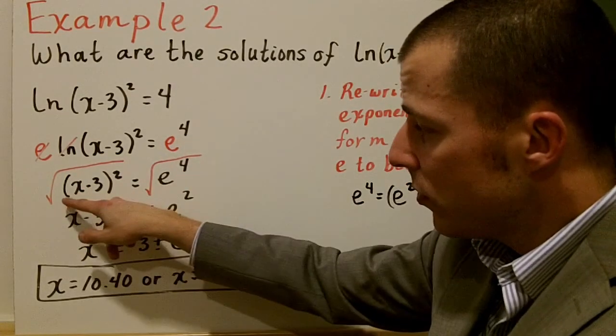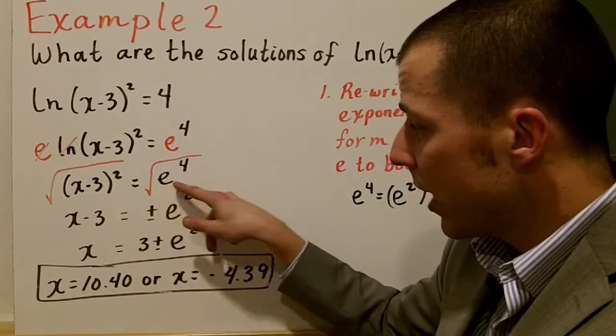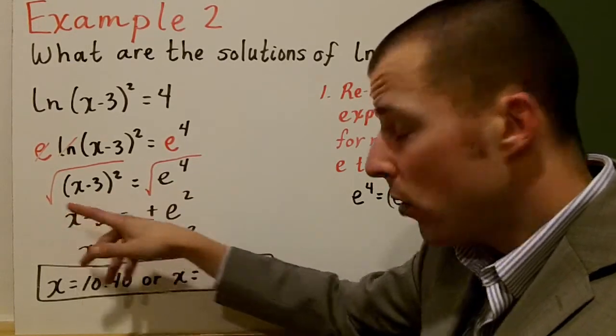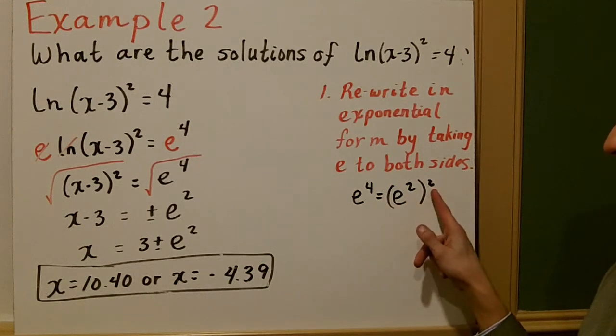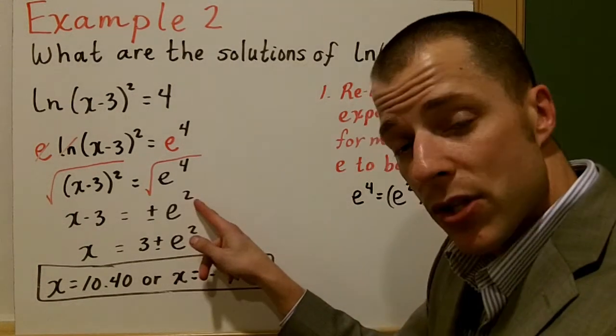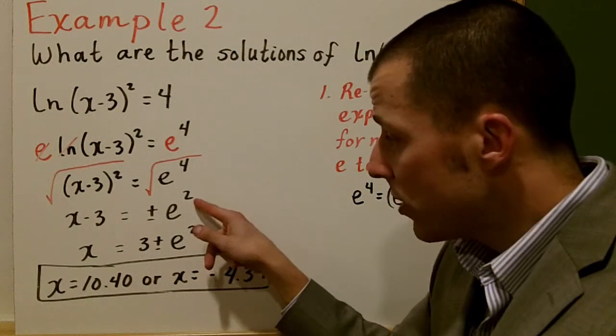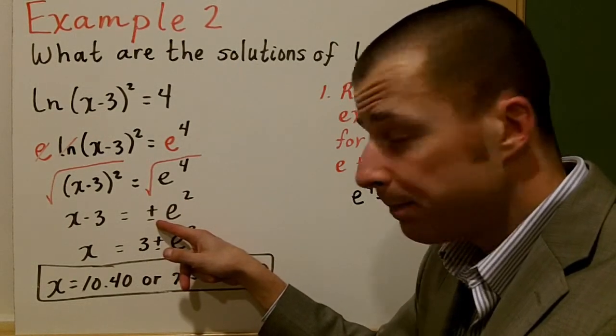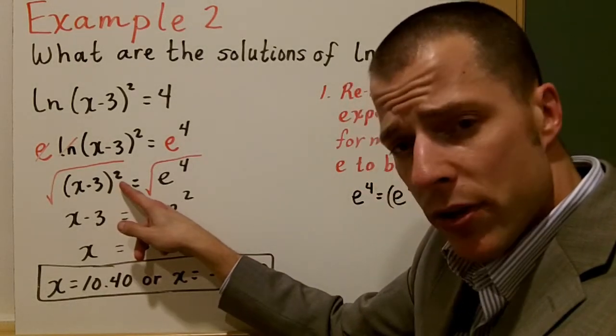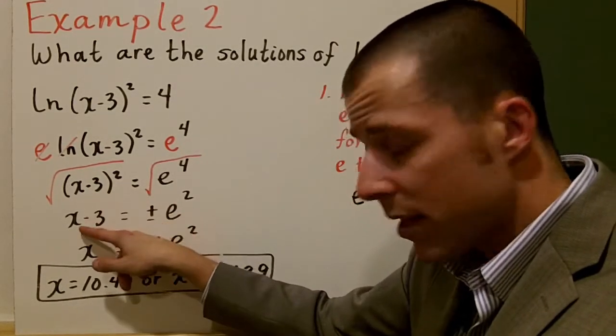Now, to undo that square, we're going to square root both sides. When you do that, you have to remember that e to the 4th is equal to e squared squared. That's why we have e squared here. And normally when you take a square root, it's plus or minus, so we're going to keep that in. When you square root a square, you undo the operation, so the base is left.